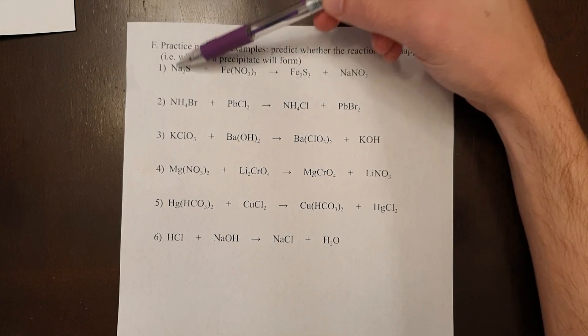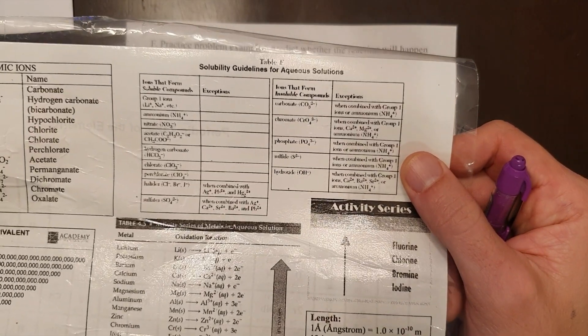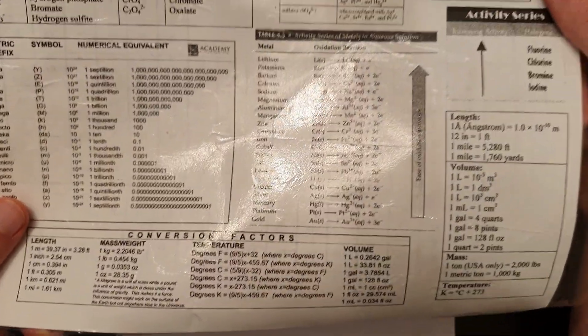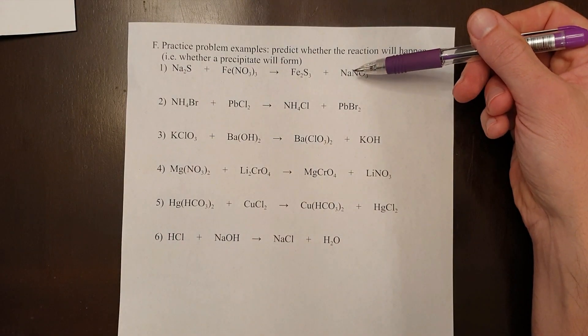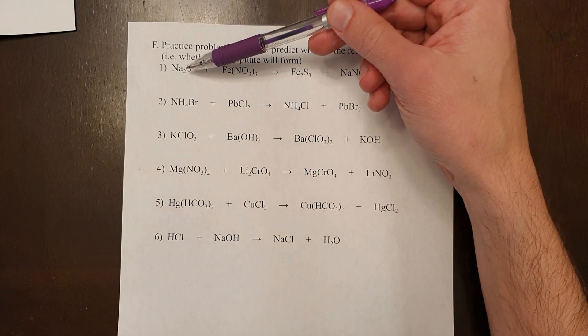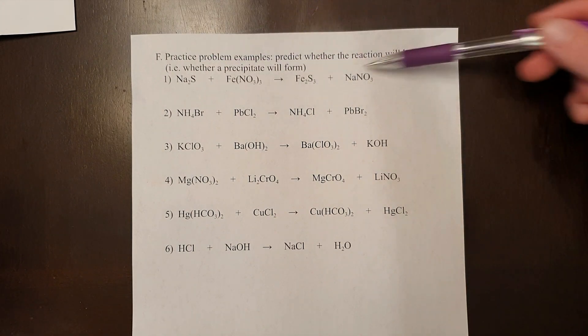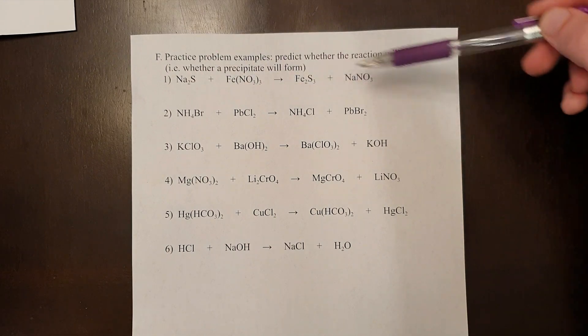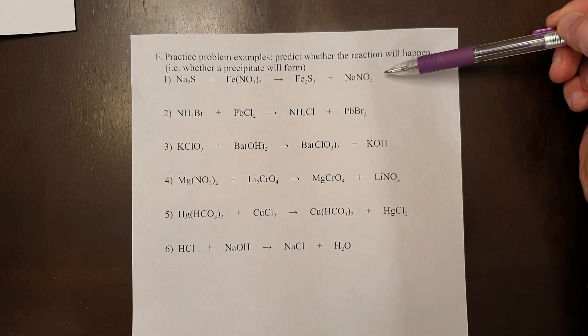For these double displacement reactions — which I recognize because the reactants are compounds and so are the products — I need to use the solubility table to determine whether they can occur. Do not use the activity series, because the activity series mentions pure elements, which are absent from the reactants and products here. If everything is soluble, i.e. aqueous, we mark everything aqueous and say no reaction — it would just mean ions everywhere. If anything, anywhere, on either side is anything other than aqueous, the reaction occurs. If everything is aqueous, no reaction. Otherwise, reaction.